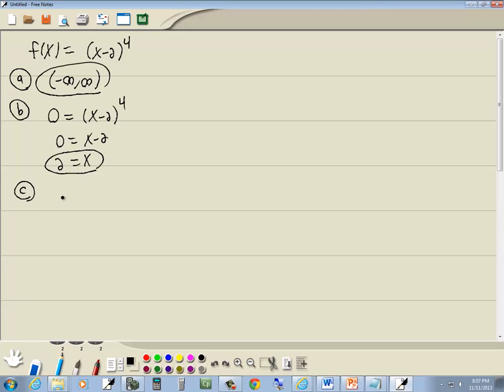Now the third thing is find the y-intercept. Again you always plug 0 into the other variable. So we're at 0 minus 2 to the fourth. Negative 2 to the fourth power gives us positive 16. So that's our y-intercept.